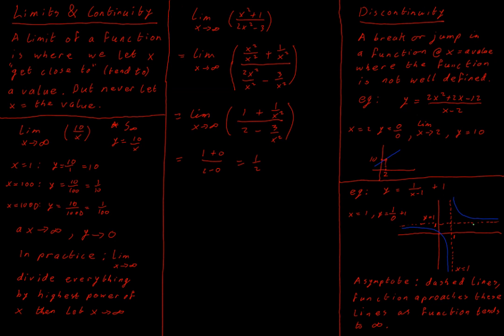Discontinuities are just where our function is not properly defined. If we're asked about the limit as x tends to infinity, divide everything above and below by the highest power of x, let the limit run, and lots of terms should tend to 0. Anything that doesn't tend to 0 is what the function tends to as x gets very large. And that's what we need for limits and continuity.